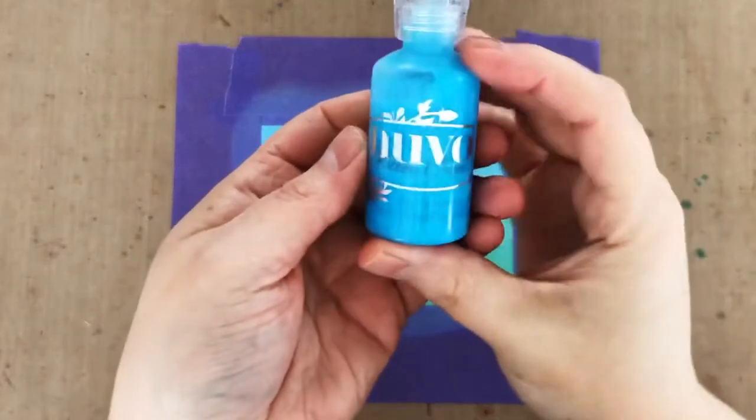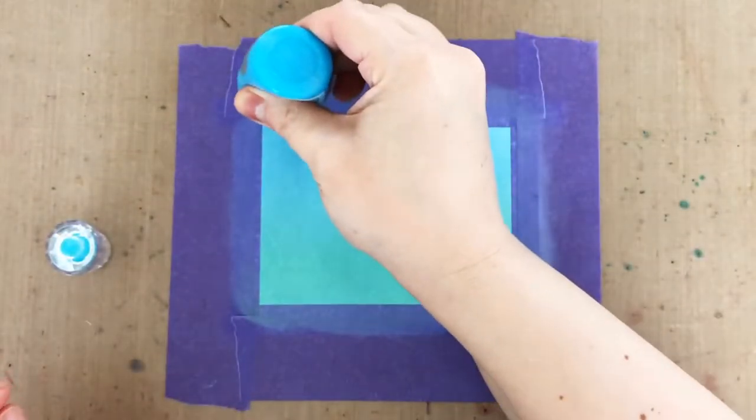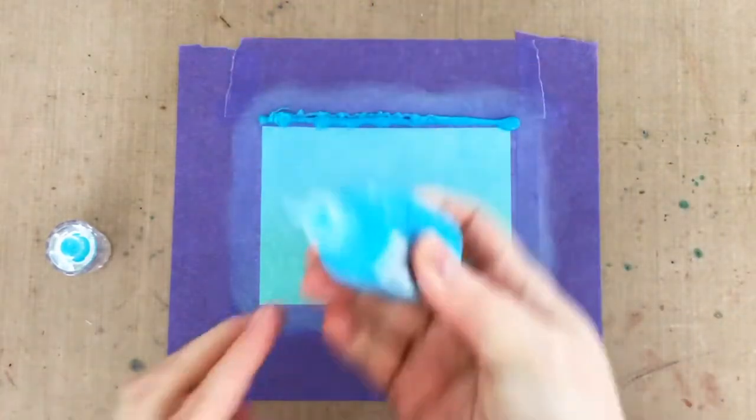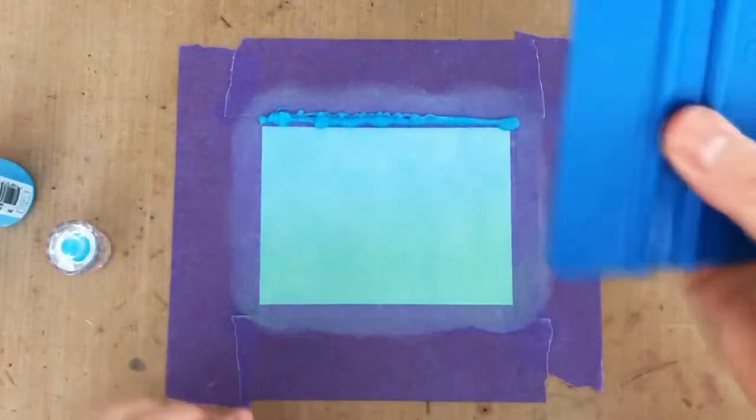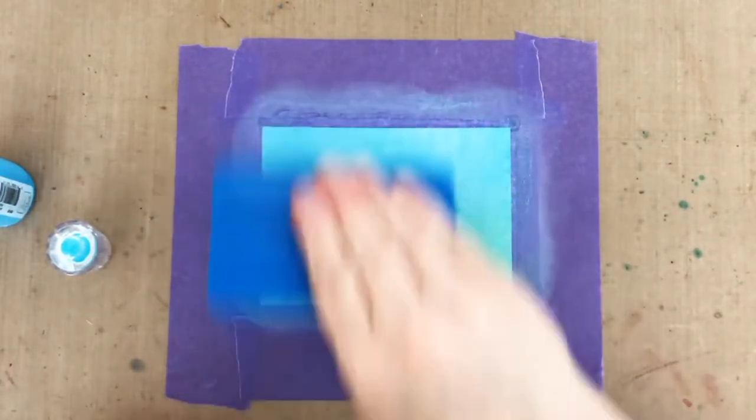For the glitter I've pulled out some Nuvo glitter drops. I'm using the glitter drops for two reasons. Number one, they do not get enough love in my craft room, and I have a lot. And number two, and this might be the more important part, I'm running low on Nuvo glimmer paste, which is my main love, so I have to find good alternatives.